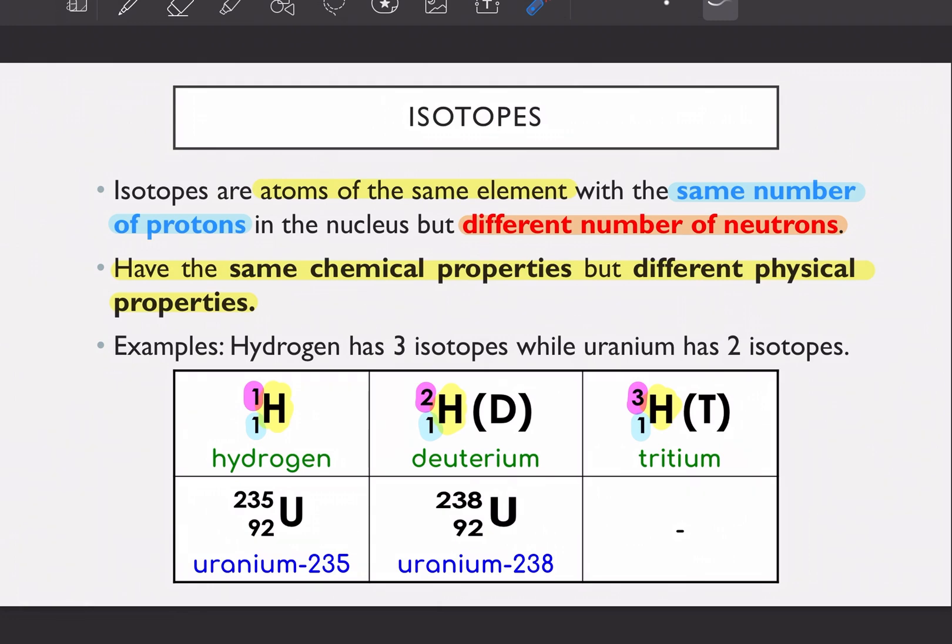Next, isotopes. This is a new term for you to learn. So isotopes are atoms of the same element with same number of protons in the nucleus but different number of neutrons. So how does that look like? Maksudnya isotopes tu adalah let's say dua atau tiga benda, atoms of the same element.